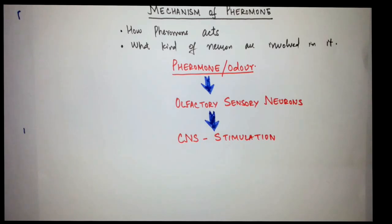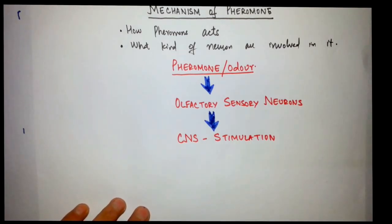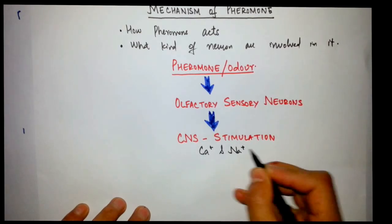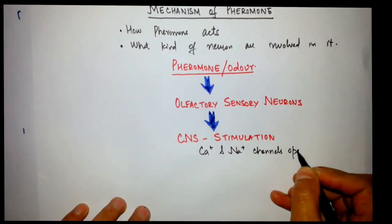How is it getting stimulated? When there is action potential in olfactory sensory neurons, a cyclic AMP pathway is activated and calcium and sodium channels are thrown open, and there is an exchange of these two cations. Calcium and sodium channels open.